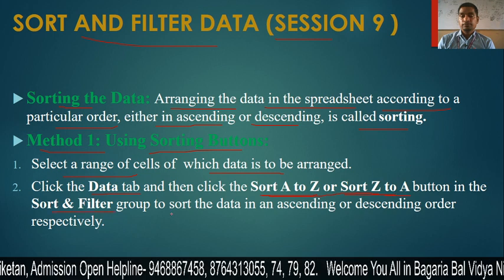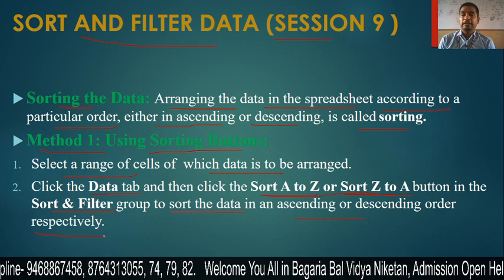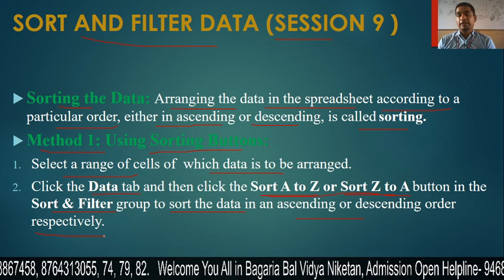Using these buttons, we will sort the data in ascending or descending order respectively. So first, select the data range, then click on the Data tab and click the Sort A to Z or Z to A button. Let's see how to do this practically.